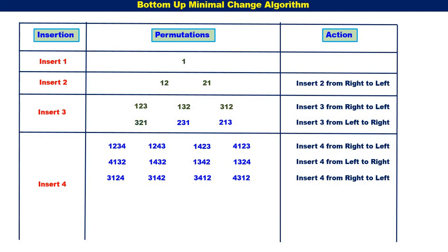Next, we consider {3, 2, 1}. For {3, 2, 1}, it is left to right. Insert 4 from left to right. When we insert 4 to the left of {3, 2, 1}, we get {4, 3, 2, 1}. Then {3, 4, 2, 1}. Then {3, 2, 4, 1}. Then {3, 2, 1, 4}. You can observe 4 is moving from left to right.